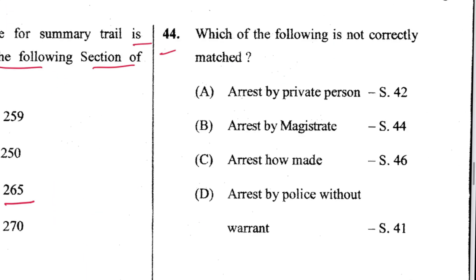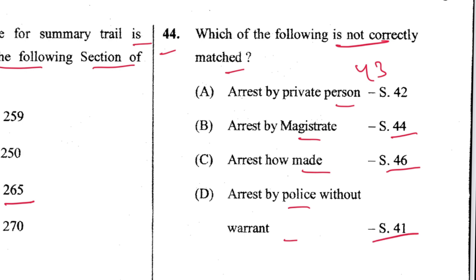Question 44: Which of the following is not correctly matched? Arrest by a private person is Section 43; arrest by a magistrate is Section 44; how arrest is made is Section 46; arrest by police without warrant is Section 41. Which is wrong? A is the answer.